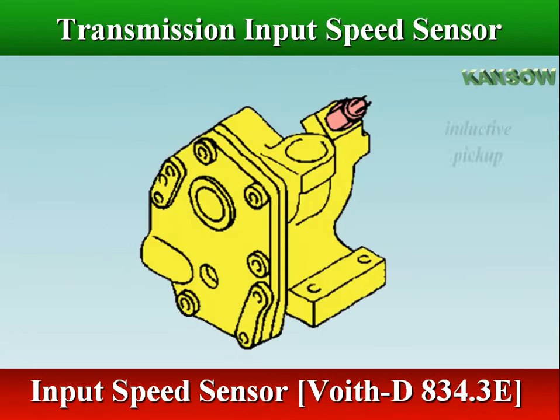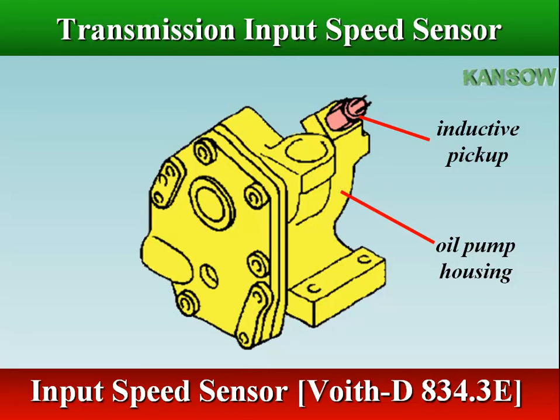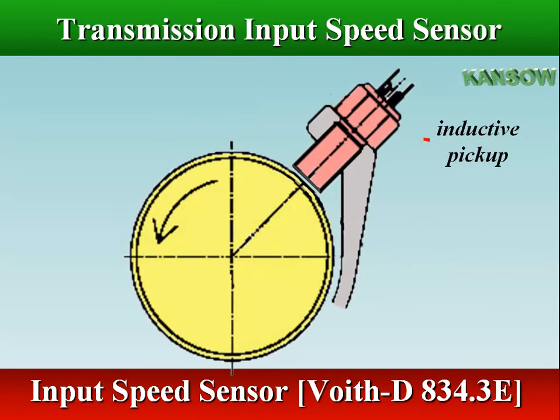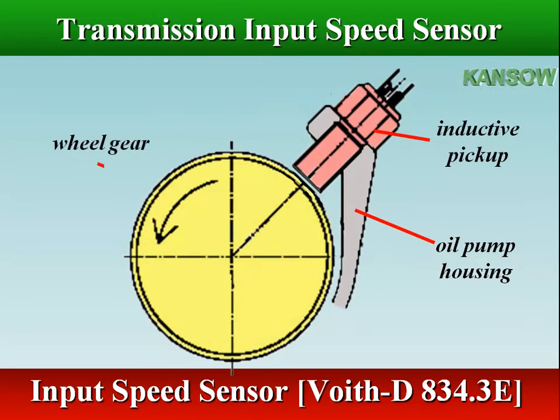In ZF ECOMAT 2 transmissions, the input speed sensor is mounted internally on the oil pump housing and directed at the wheel gear of the oil pump.